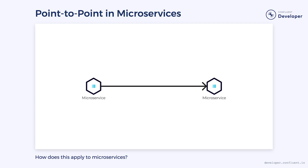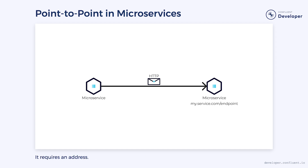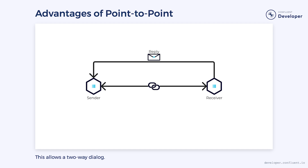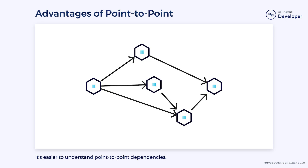Now let's look at how this applies to microservices. Point-to-point communication in microservices often takes the form of HTTP or GRPC calls. One microservice sends a message to another using these protocols. In order to send the message we need the address of the recipient. The receiver will process the message and often synchronously send a reply. Point-to-point communication has advantages in software just like it does in the real world. It creates a concrete link between the sender and the receiver, allowing for a two-way dialogue where the sender can reasonably expect a response. If something goes wrong, the two-way link allows the sender to potentially take action to mitigate the issue. It also makes it easier to understand what dependencies exist between different services.